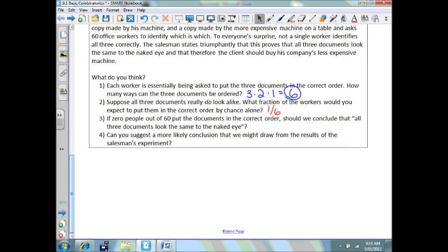If zero people out of 60 put the documents in the correct order, should we conclude that all three documents look the same to the naked eye? No, we shouldn't, because there's no way that they could all look the same to the naked eye just because they didn't put them in the correct order. Can you suggest a more likely conclusion that we might draw from the results of the salesman's experiment? Well, he probably rigged the experiment to prove that his machine is the better one that they should buy.